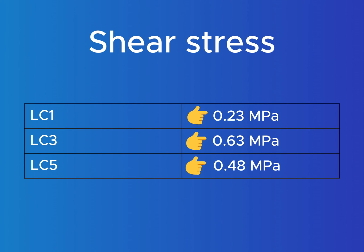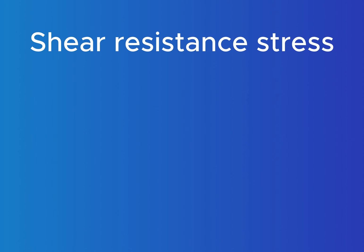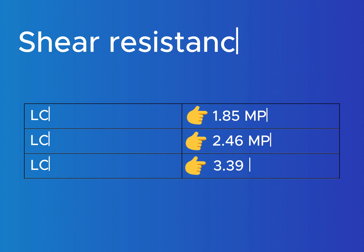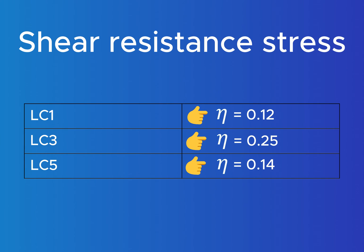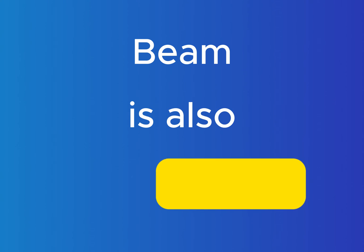The last step before we can check whether the cross section can resist the loads is calculating the shear resistance stresses of the timber material as K-Mod times shear resistance stress over partial safety factor. And finally we can calculate the utilization of the cross section with design shear stress over design shear resistance. We can see again that load combination 3 leads to the biggest utilization but it's far from 1, so the beam is also verified for shear.